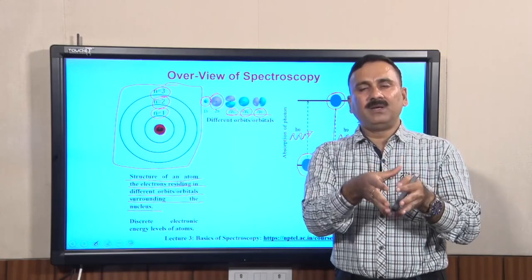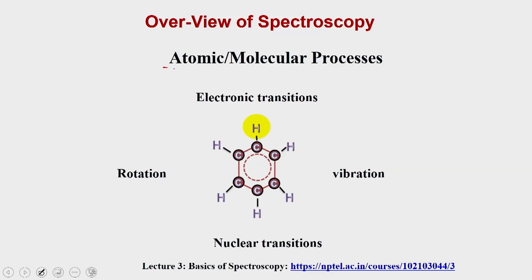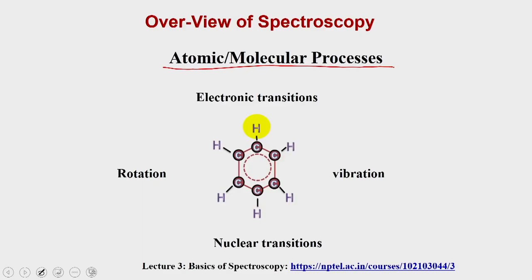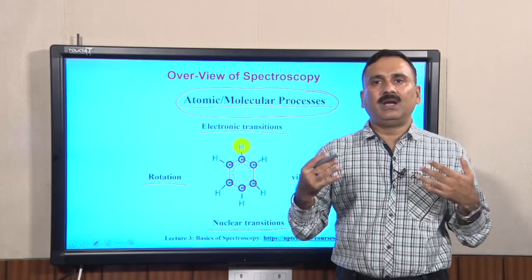All these absorption and emission phenomena happen differentially for different molecules because of various atomic and molecular processes occurring within the molecule — rotations, electronic transitions, vibrations, and nuclear transitions. We will discuss in the next slide what these processes are and how you can map electronic transitions, rotations, nuclear transitions, and vibrations using different parts of the electromagnetic radiation.